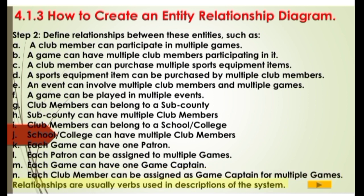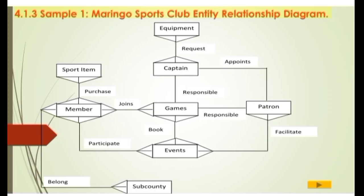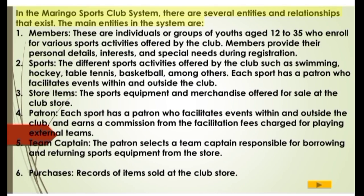Sample 1: Maringo Sports Club Entity Relationship Diagram. The entities include Member, Sport Item, Games, Patron, Captain, Sub-county, Events, and Equipment. The relationships include Request, Appoints, Responsible, Facilitate, Participate, Joins, Purchase, Book, and Belong. In the Maringo Sports Club system, there are several entities and relationships that exist.